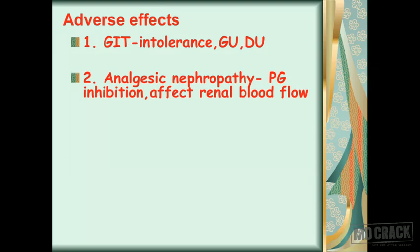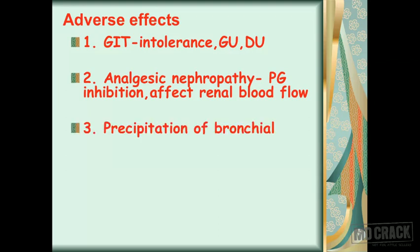The second well-established adverse effect is analgesic nephropathy — renal damage — due to inhibition of prostaglandins in the kidneys, affecting renal blood flow over a long period and producing renal damage. The third important adverse effect is precipitation of bronchial asthma. When NSAIDs inhibit the cyclooxygenase enzyme, arachidonic acid takes the lipoxygenase pathway instead, leading to formation of leukotrienes — important chemical mediators of asthma.